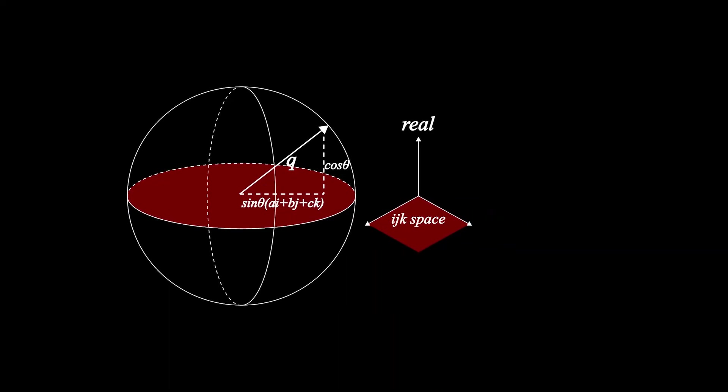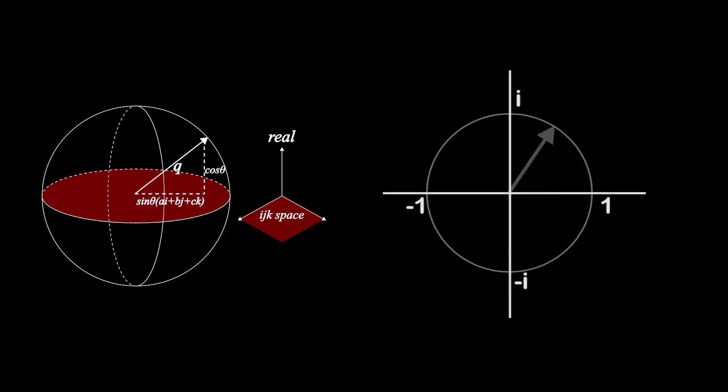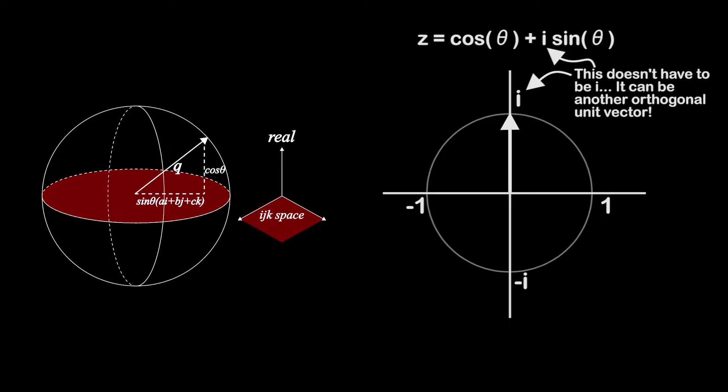Let's think back to complex numbers for a moment. To specify a complex number z on the unit circle that makes some angle theta with the horizontal, you can write z equals cosine theta plus i sine theta. Increasing theta will rotate a point around the circle passing through 1 and i. But instead of multiplying sine theta by i, we can multiply it by any unit vector, so long as it's orthogonal to the real axis, and we would still get a unit circle. So, let's do exactly that.